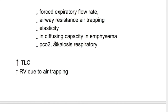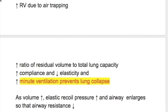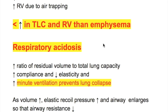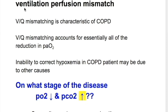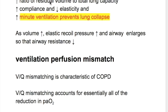Parameters that are increased in emphysema are: increased total lung capacity because of air trapping, increased residual volume because of air trapping — though there is less increase in total lung capacity and residual volume in chronic bronchitis. Also increased is the ratio of residual volume to total lung capacity, increased compliance, and decreased elasticity.